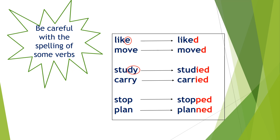For example: study → studied, carry → carried. Pay attention to these verbs: stopped, planned. How do you spell them? You write double-P for stopped and double-N for planned.